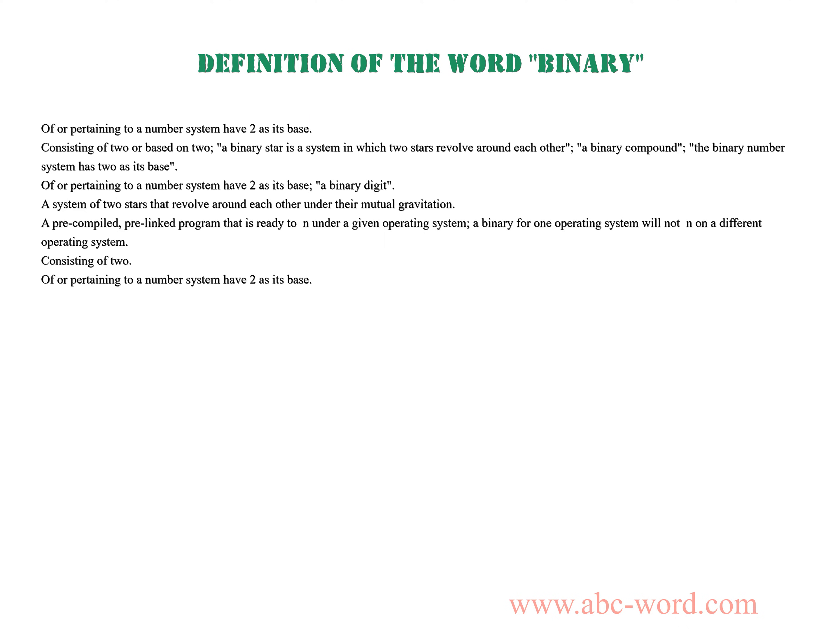The binary number system has two as its base. A binary digit. A system of two stars that revolve around each other under their mutual gravitation. A pre-compiled, pre-linked program that is ready to run under a given operating system. A binary for one operating system will not run on a different operating system. Consisting of two.